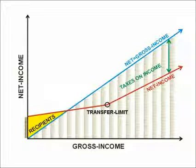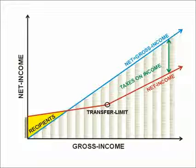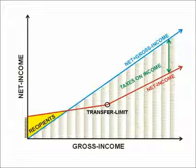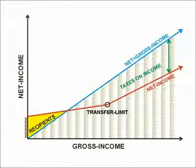All these shown models can work with an additional basic income too. In that case, the gross income includes basic income, as for example in Alaska, where the incomes from the permanent fund must be taxed.